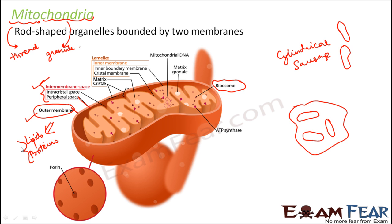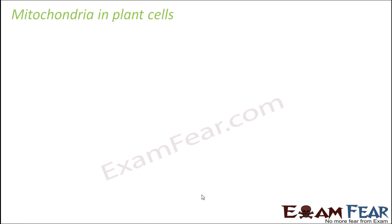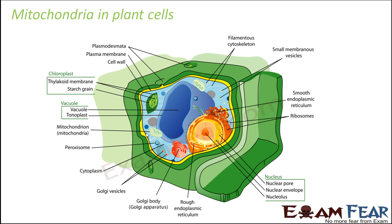Now let us see where exactly mitochondria are located. In the animal cell, you can see the entire yellow structure with a green structure inside — that is the mitochondria. In this particular cell, you can see two mitochondria. Mitochondria are also present in plant cells, and again you can see one and another mitochondria here.